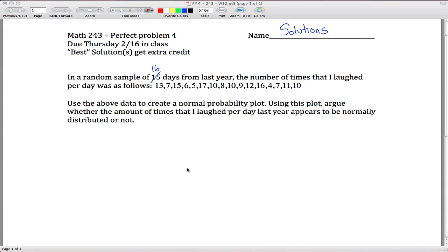Alright, here are problem 4 solutions for Math 243. This is going to take forever. So we're given a bunch of data, 16 data points, and I'm asked to create a normal probability plot. So there's three steps in doing that. The first step is you copy down all your data in ascending order.